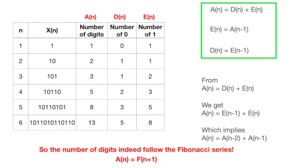After we get all these relations, we can now substitute the third equation into the first one, to get a(n) equals e(n-1) plus e(n). Furthermore, using the second equation, we can see that a(n) equals a(n-1) plus a(n-2), which is indeed the Fibonacci series.